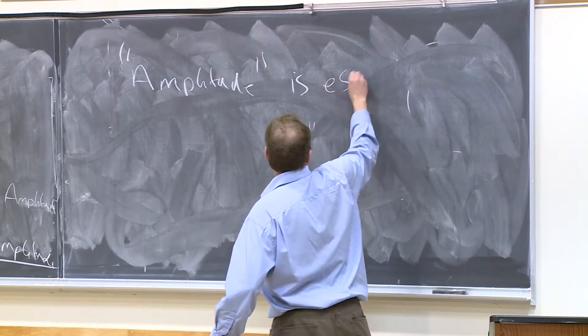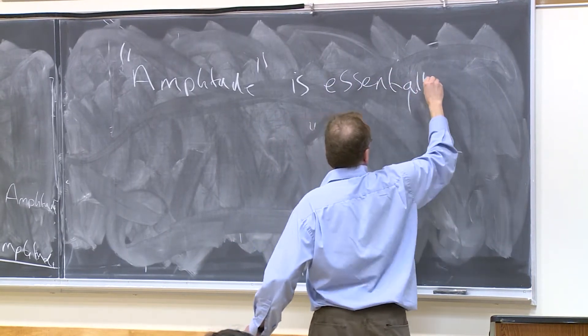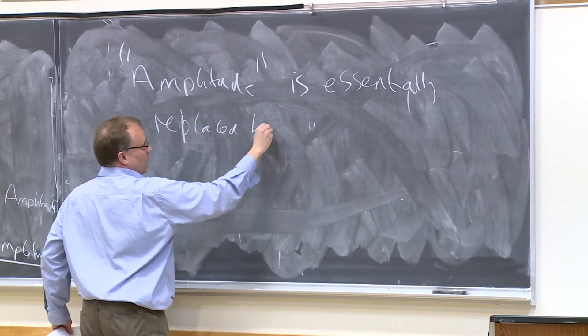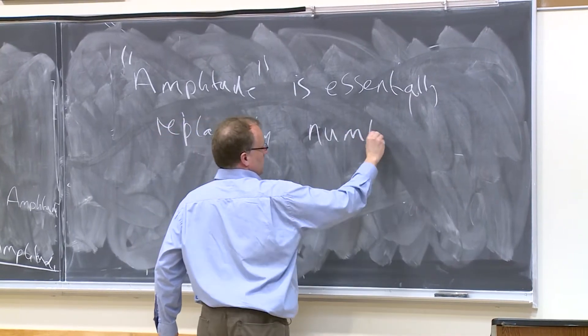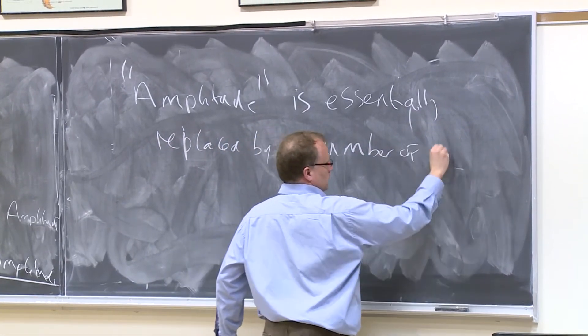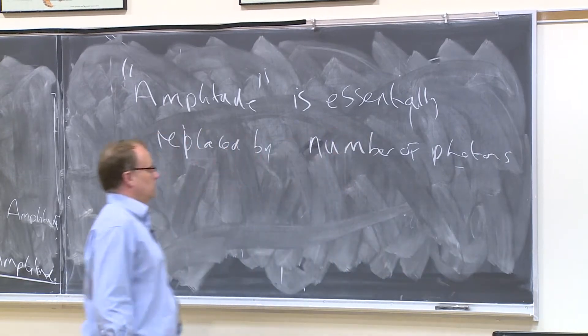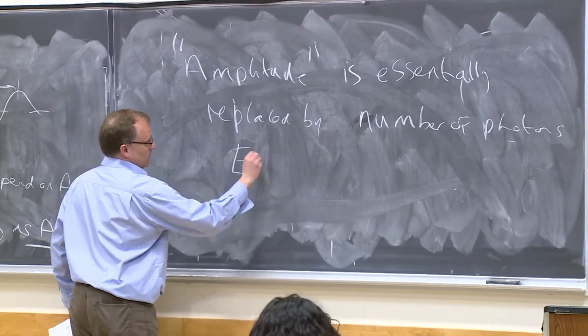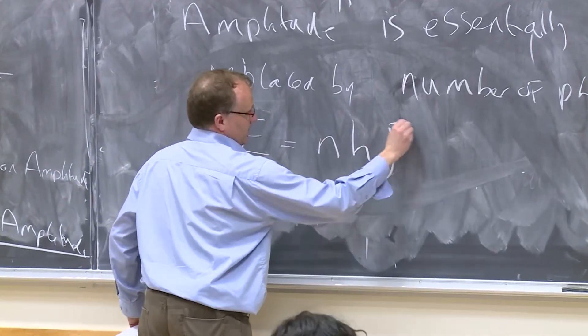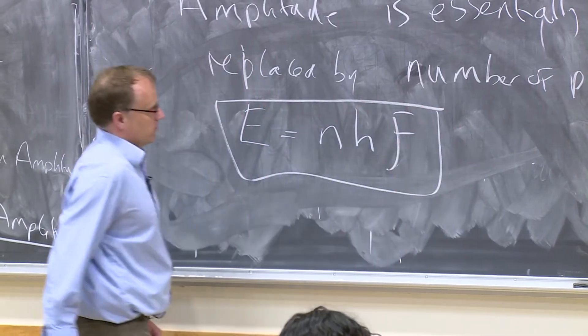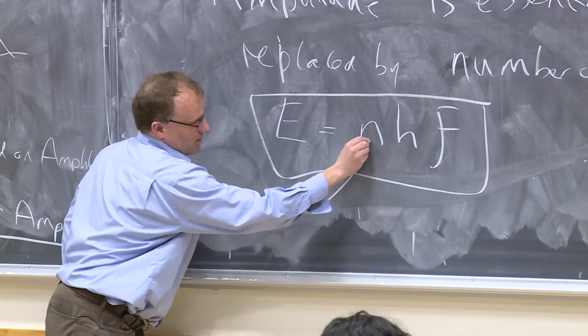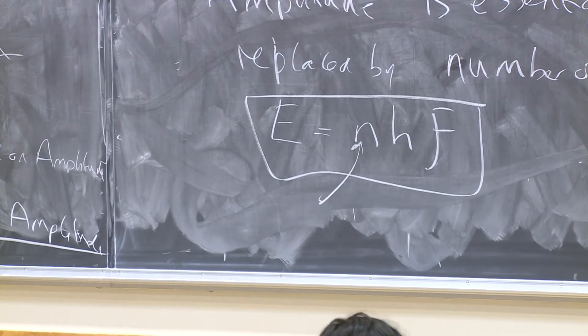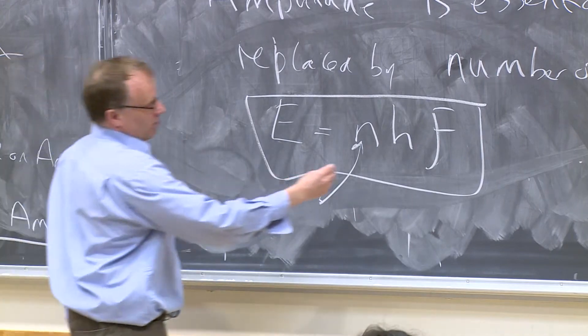So in other words, the energy is equal to N H F. So this is representative of amplitude, it's not the same thing. And you still have the frequency dependence, but it's just linear. So this is the model of light.